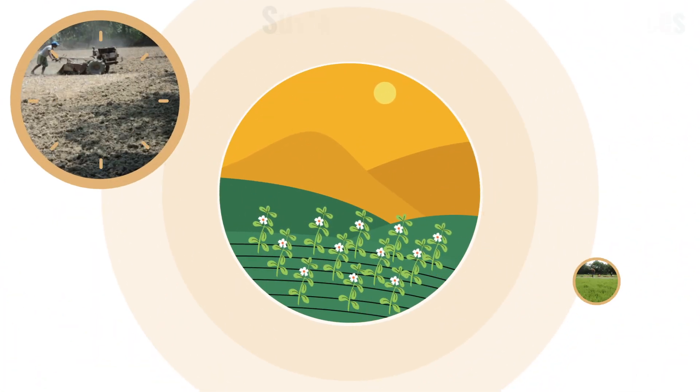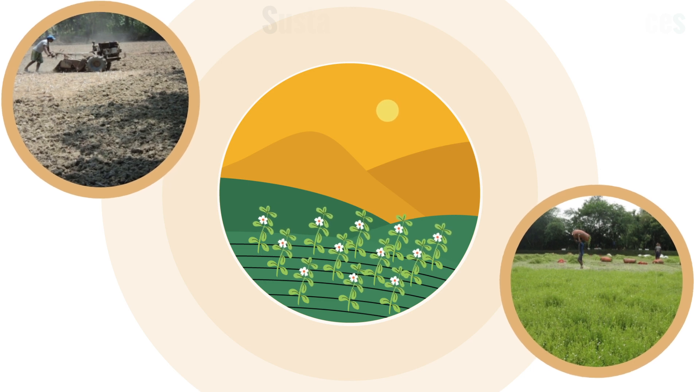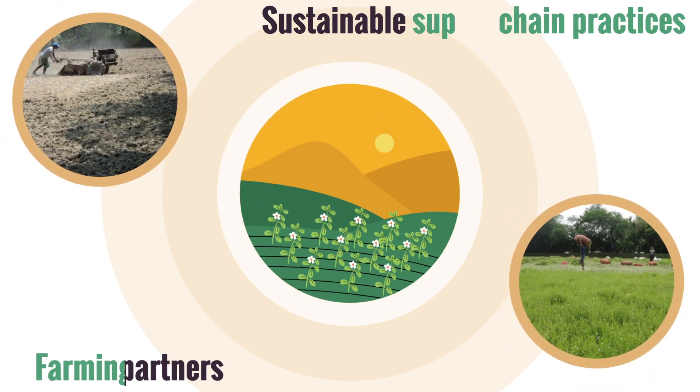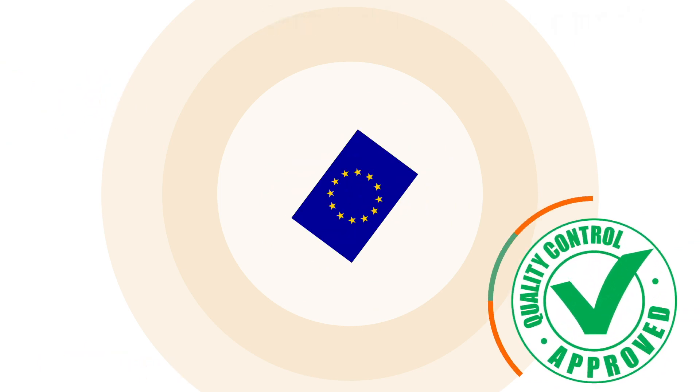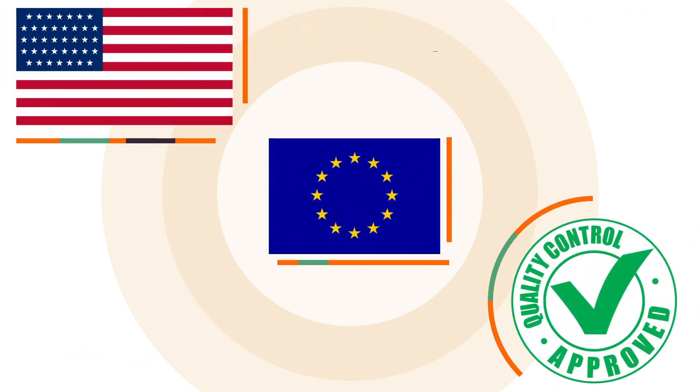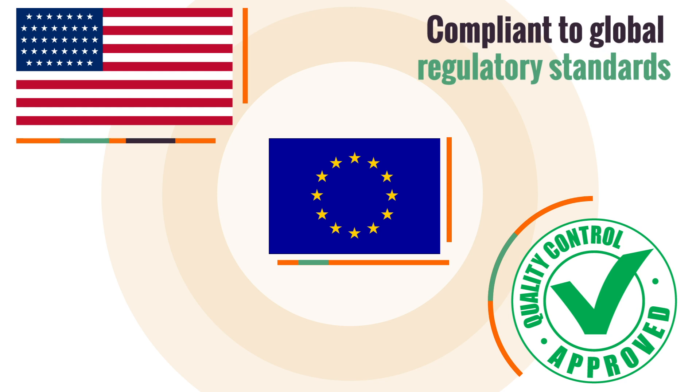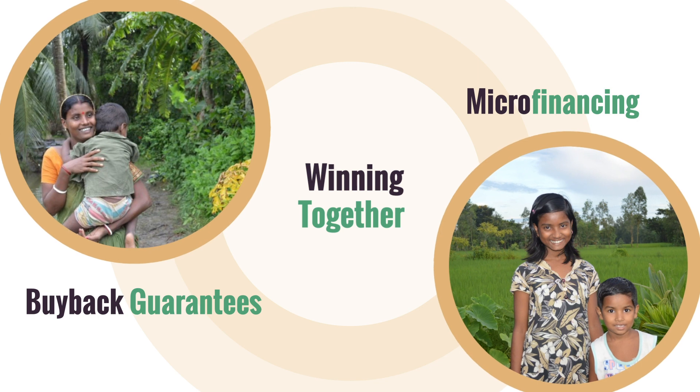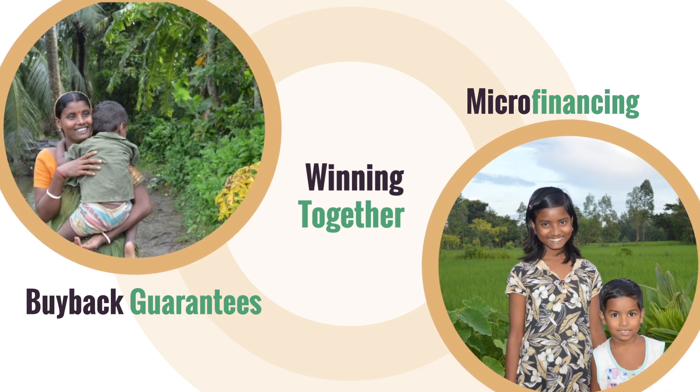BaccoMind is developed from the best Bacopa cultivated by our farming partners using sustainable supply chain practices. High quality standards compliant to stringent European, US, and other global regulatory standards. Winning together through micro-financing and buyback guarantees, ensuring the livelihood of our farming partners.